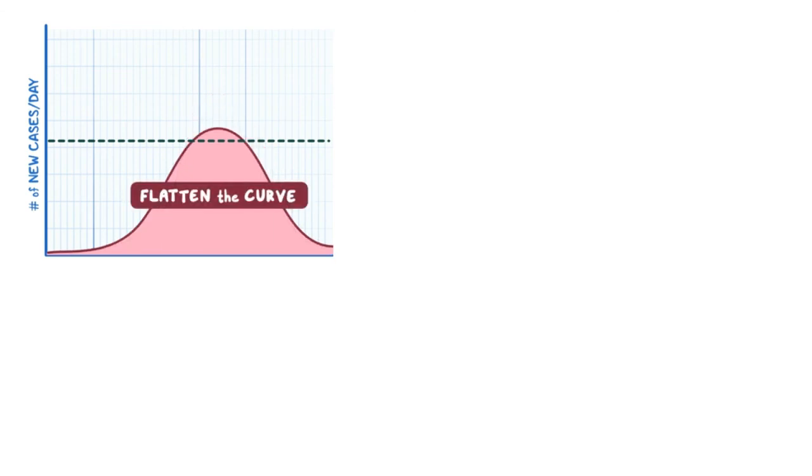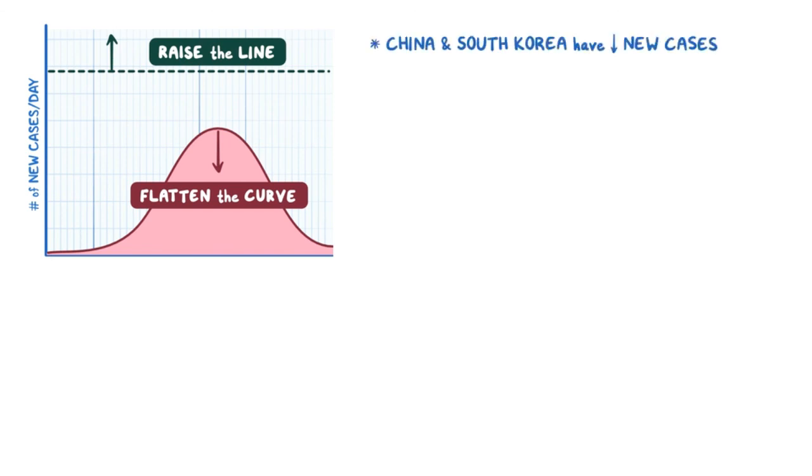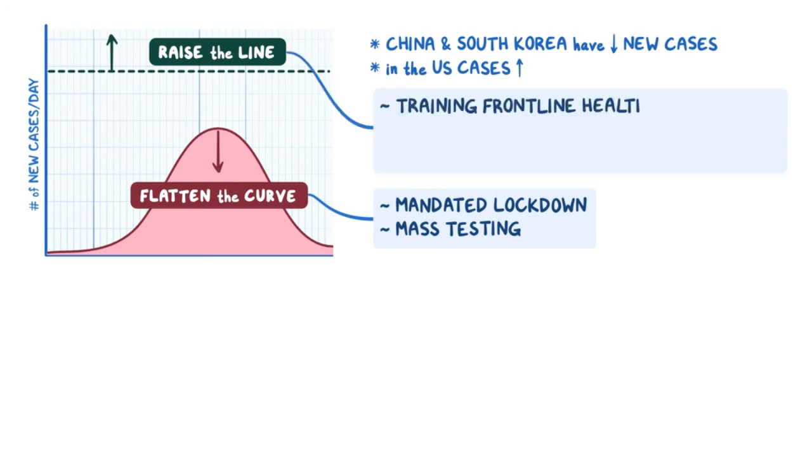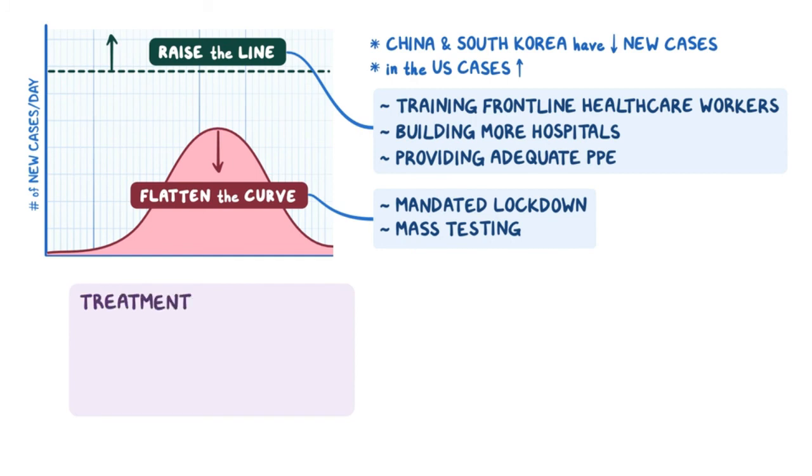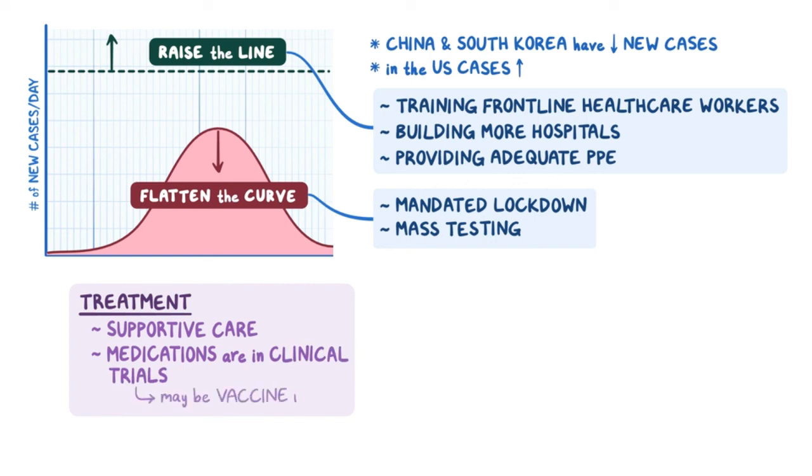All right, as a quick recap, four months after the start of the COVID-19 pandemic, countries around the world have had varying levels of success in containing the disease. This is done by flattening the curve and raising the line. Some countries like China and South Korea have decreased the number of new cases, while in the US the number continues to rise. A mandated lockdown at a federal level to enforce social distancing and mass testing are key components to preventing the spread of the disease, while raising the line can be accomplished by training more frontline healthcare workers, building more hospitals, and providing hospital staff with adequate PPE. Treatments are focused on supportive care, and a number of medications are in clinical trials, and there may be a vaccine ready in 2021.